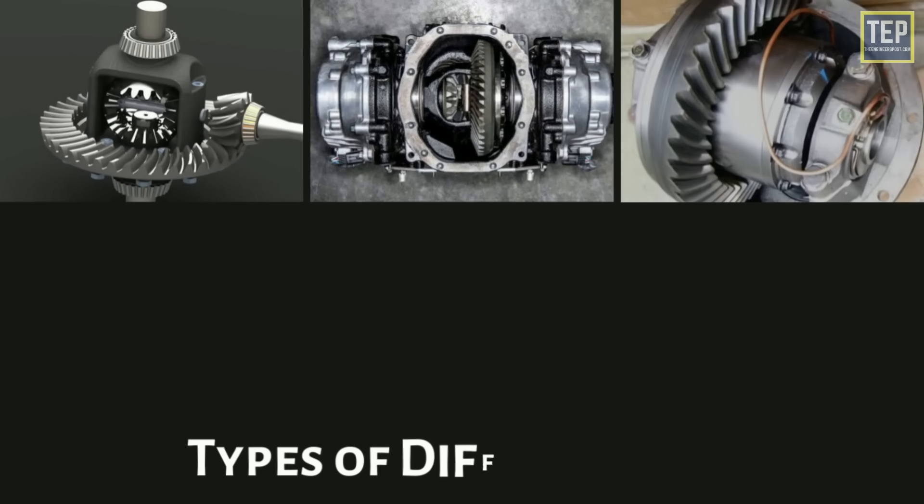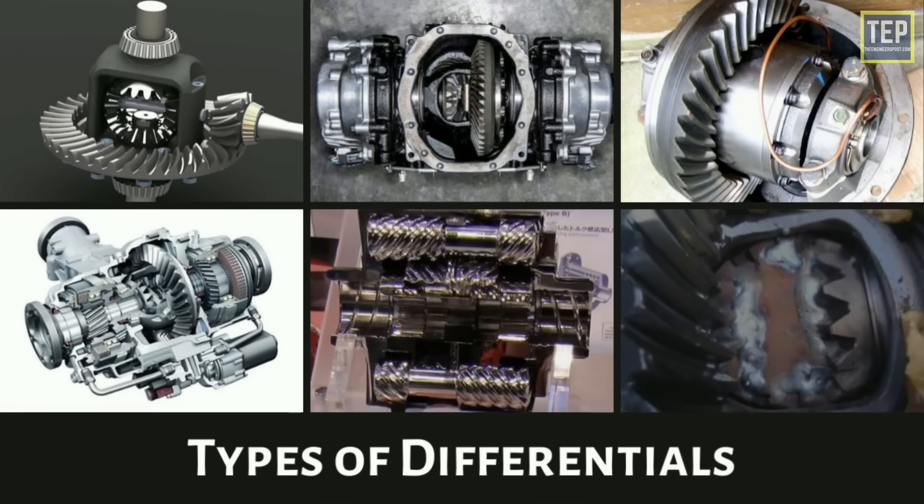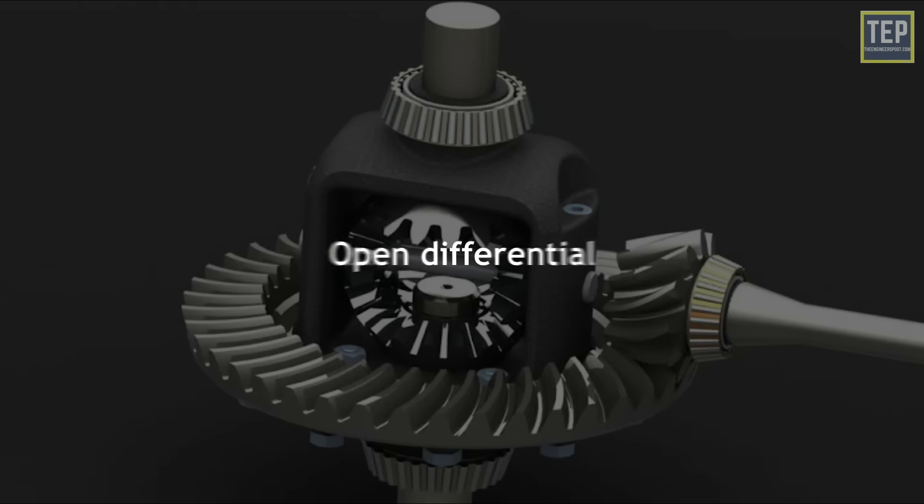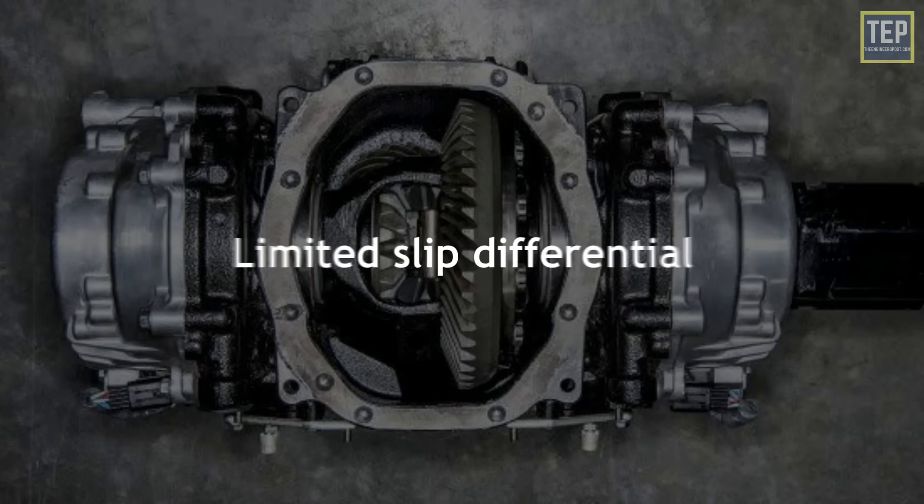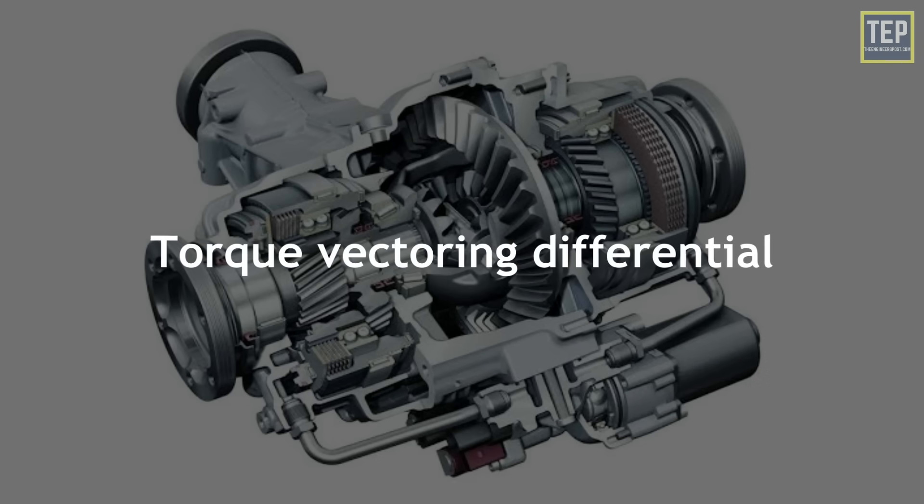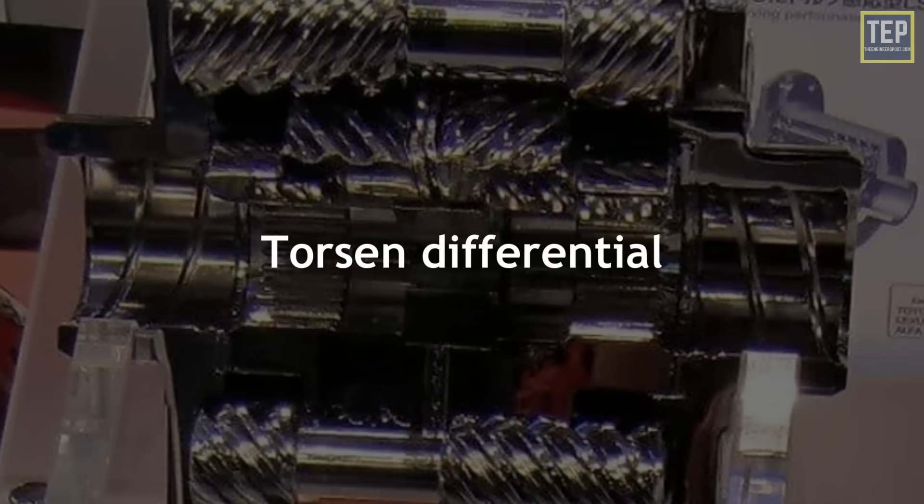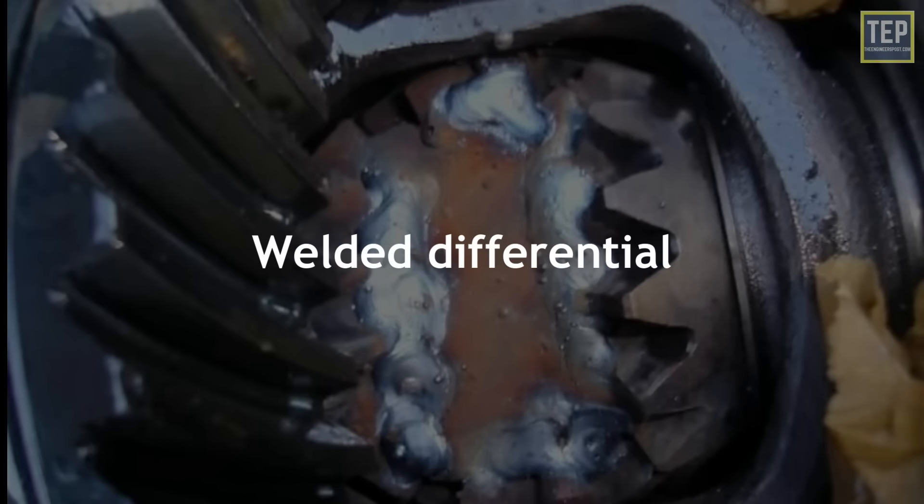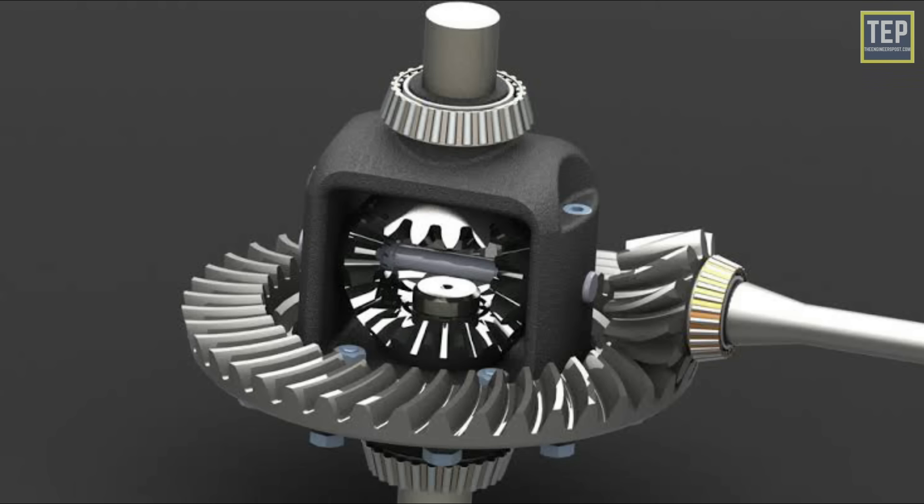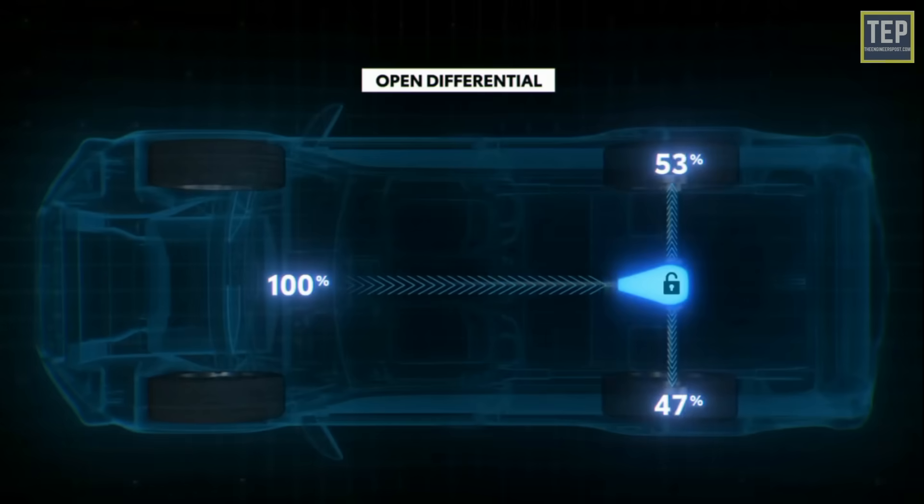Now let's take a look at the different types of differentials and how they work. The different types of differentials are: open differential, limited slip differential, locking differential, torque vectoring differential, torsen differential, and welded differential. Now let's take a look at how these differentials work, starting with open differential. These types of differentials are the most essential and only allow individual wheel speed or slip to be changed.